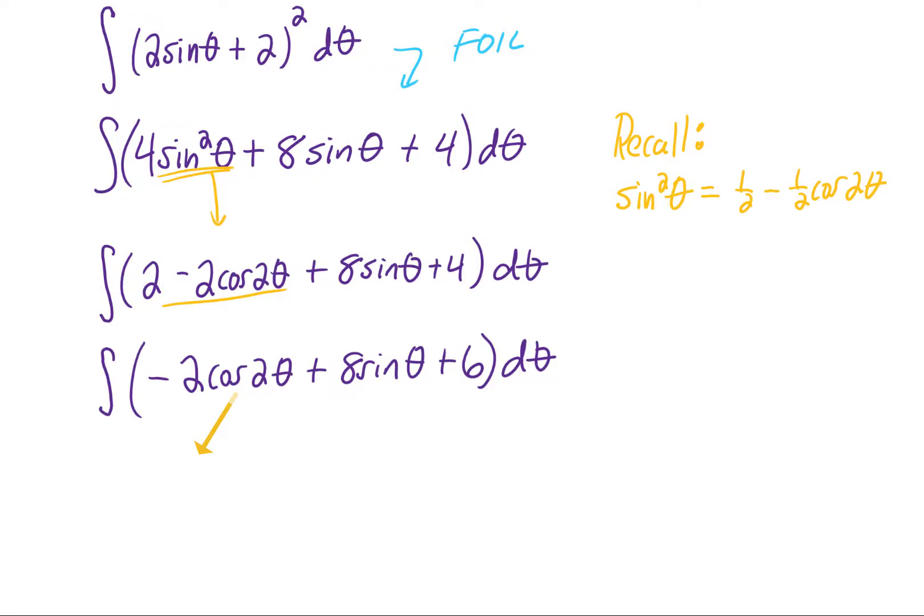The integral of cosine is sine. This negative is going to stay here. Don't forget that because we have a 2 theta here, we actually have to divide this integral by 2. Technically, that's a u substitution. The integral of sine is negative cosine, and the integral of 6 is just 6 theta.